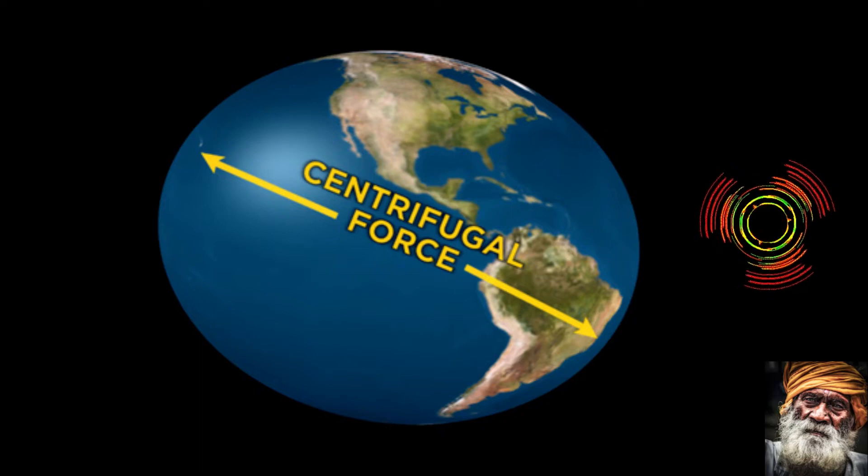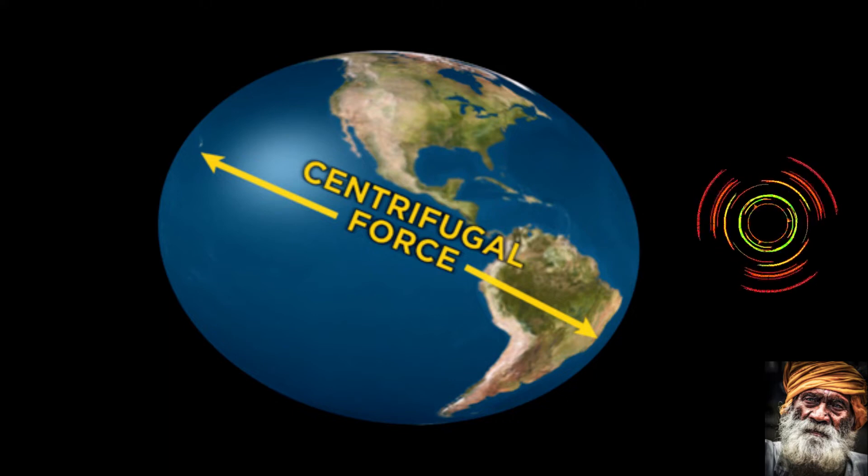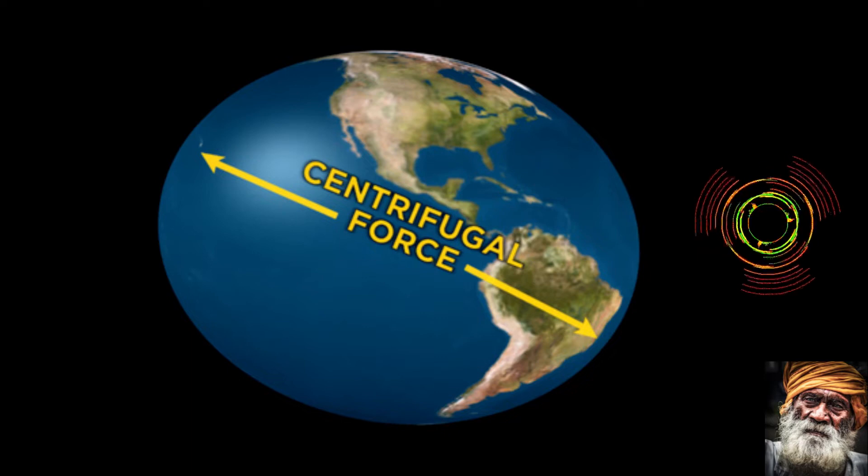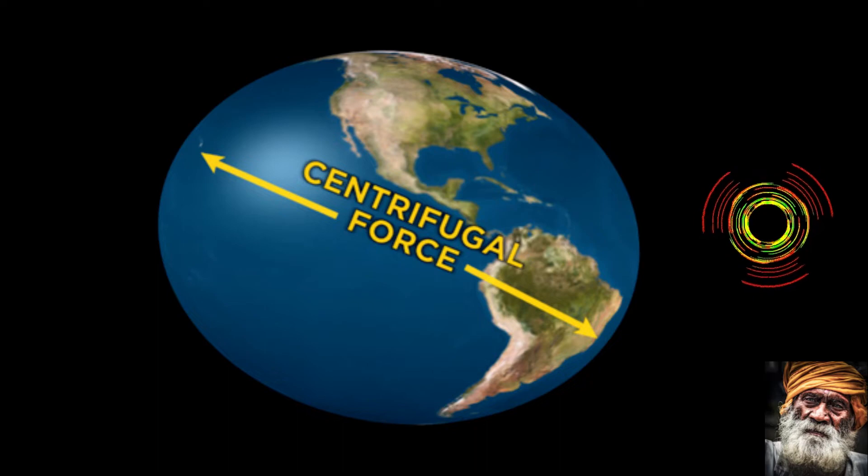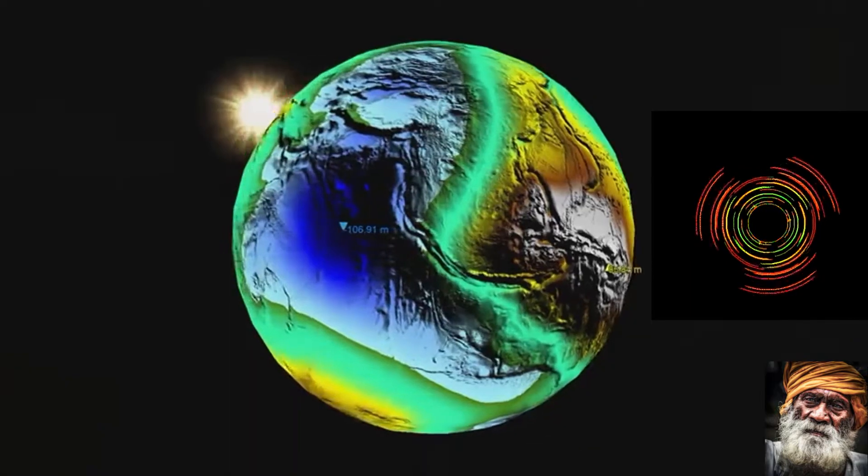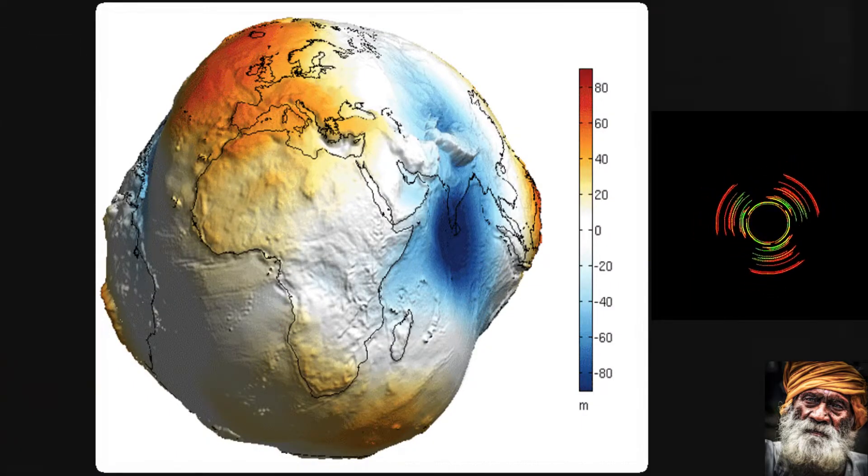That's our Earth for you. There are some Earth scientists that go out and try to measure the Earth. What they find is that the acceleration of gravity is actually different at different places on the Earth, which means that the mass of the Earth is not spherical. It's not even close.